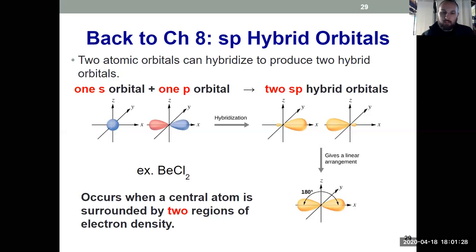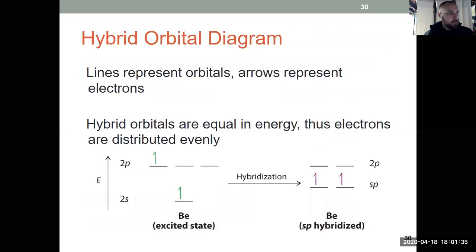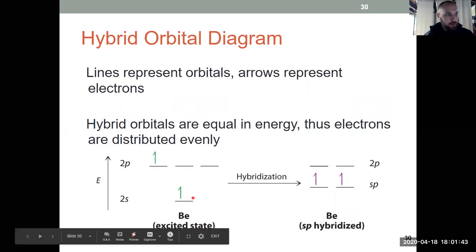But you do have to know the Lewis structure, be able to draw the Lewis structure from Chapter 7 before you can determine the hybridization. And this is what the energy diagram looks like for that. I went from beryllium before with the 2s and the 2p. There's one 2s orbital and three 2p orbitals that are degenerate, same energy. Two electrons in beryllium, I bump one up to the excited state.